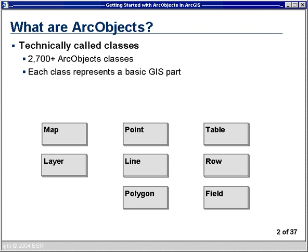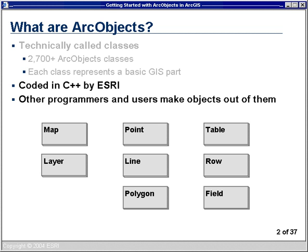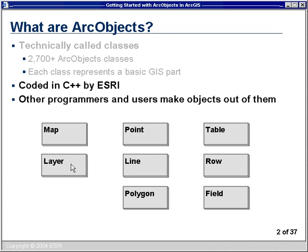ArcObjects aren't really objects at all — they are a set of classes. There are 2,700 of them altogether, and each one represents some basic building block of GIS. Programmers at ESRI write C++ code to build these classes. So for a class like the layer class, there's C++ code behind the scenes to get a layer to look the way it's supposed to, with a legend, color options, and symbol options. Then other programmers and users like ourselves make objects out of these classes and go about setting properties.